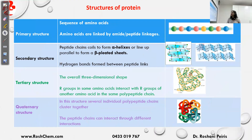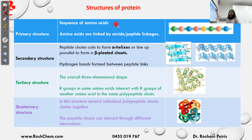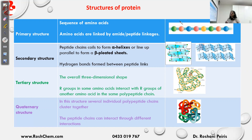Now we'll look at the structures of protein. Protein has four structures: primary, secondary, tertiary, and quaternary structure. The primary structure is the sequence of amino acids — what the amino acids are, in which order, and how many amino acids are arranged. You can see the primary structure where the amino acids are held by the amide peptide linkage.